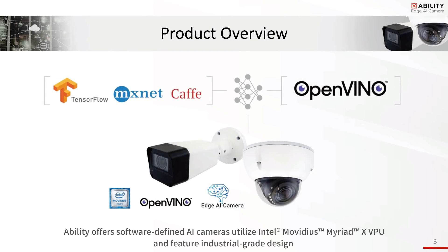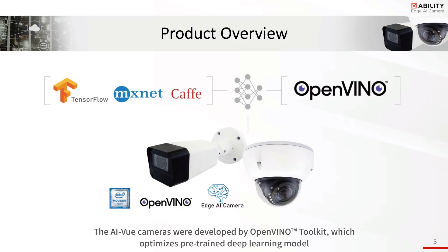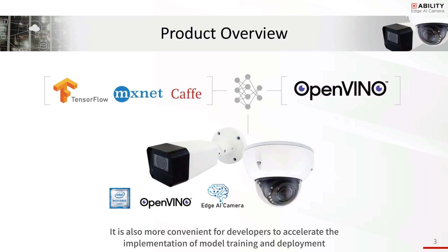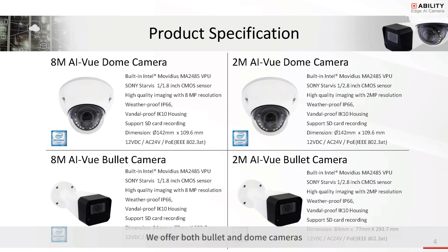ABRT offers a software-defined AI camera with industrial-grade design in Bullet and Dome form factors, powered by Intel Myriad's VPU. The AI View camera features an open middleware toolkit structure which can optimize trained deep learning models. This makes it convenient for developers to accelerate model training and deployment. ABRT offers both Bullet and Dome type cameras.